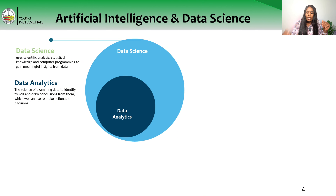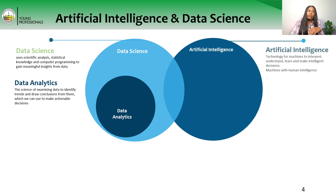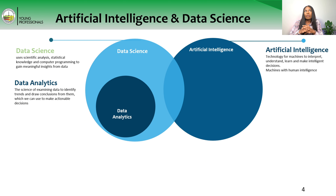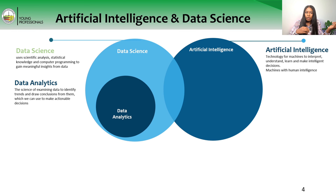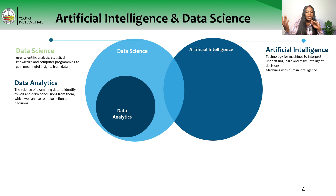On the other hand, we have artificial intelligence, which typically involves using technology or training machines to interpret information just like humans do. There are overlaps between artificial intelligence and data science — they are different, but you have some overlaps within these two fields.